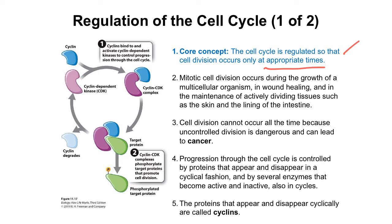The progression through the cell cycle is a precisely controlled process. It is controlled by a large family of diverse proteins that appear and disappear in a cyclical fashion, and by several enzymes that become active and inactive also in cycles. This family of proteins that appear and disappear cyclically are called cyclins.